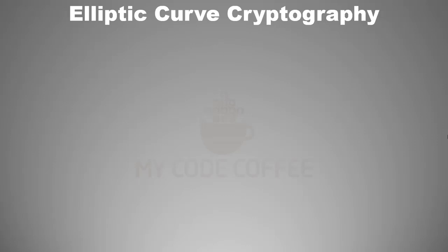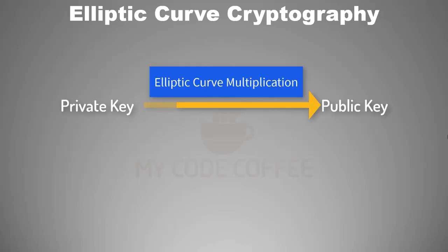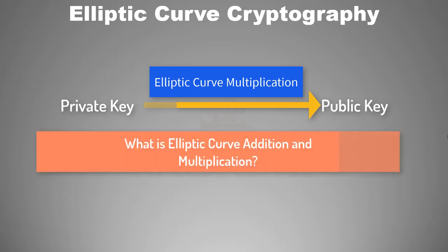In the previous chapter we learned that public key is generated by applying elliptical curve multiplication on private key. In this chapter we will understand what elliptical curve addition and multiplication are.